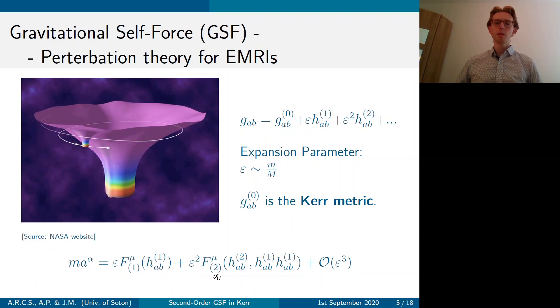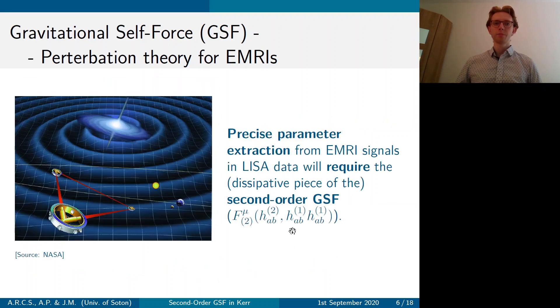So in this talk, I'm going to be talking about how you can calculate the second order self-force F2. So in context with the LISA symposium, the second order self-force is required for precise parameter extraction from EMRI signals in the LISA data. So this will allow you to do groundbreaking tests on general relativity.